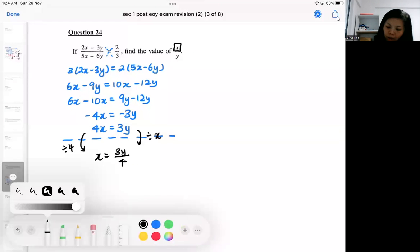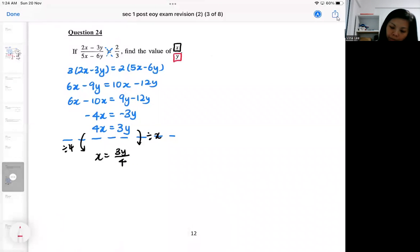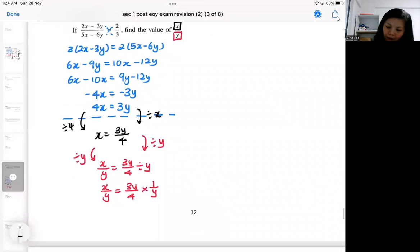And then you need a Y to be at the bottom. So you divide by Y on both sides. So as you divide by Y, it became a 1 over Y. And that's where your Y can be cancelled. And eventually you're left with this.